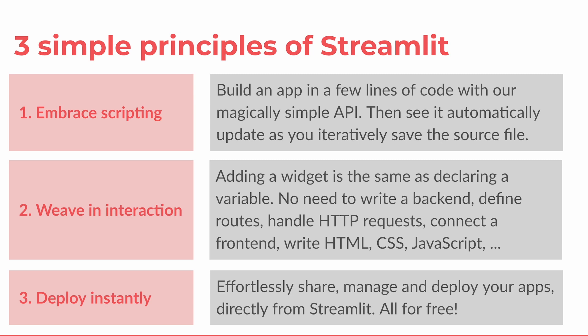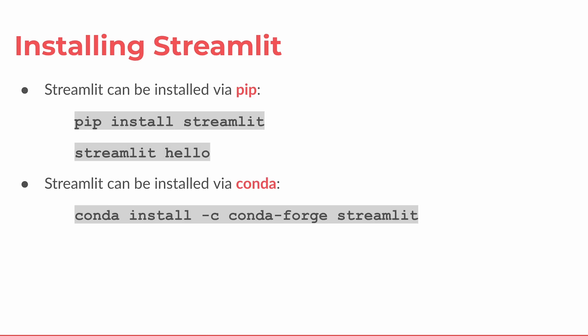The third principle is you could effortlessly build and share the app with the community, which is free on the Streamlit Community Cloud. However, if you require additional resources, you could also self-host your own web server for Streamlit applications. Installing Streamlit is very simple — you could use pip or Conda. For instance, with pip you can do pip install streamlit, and after installation you could type streamlit hello, which will bring up an example demo app for you to play around with.